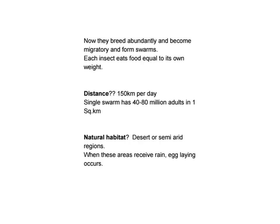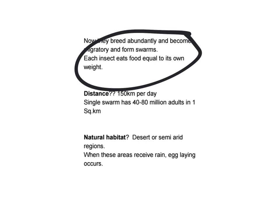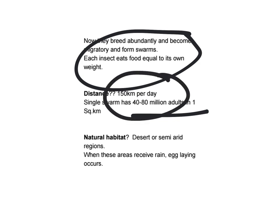When they are in the gregarious phase, they breed abundantly, become migratory, and form swarms. Each insect eats food equal to its own body weight. Though this seems a very small measure, imagine when there are 40 to 80 million adults in a one square kilometer area — they can create immense damage to entire standing crops. They also cover a distance of 150 kilometers per day.